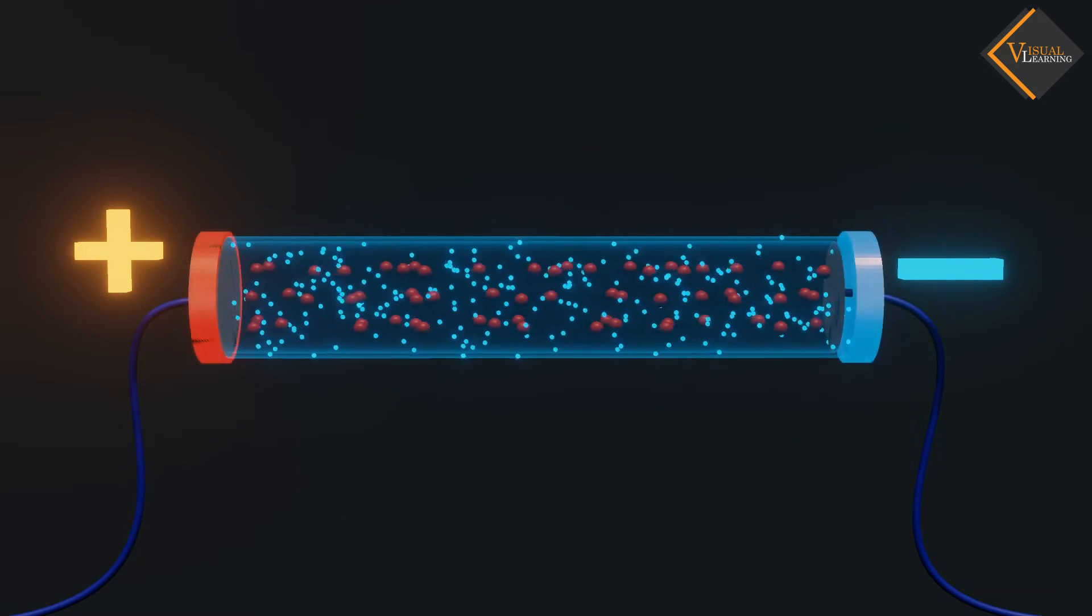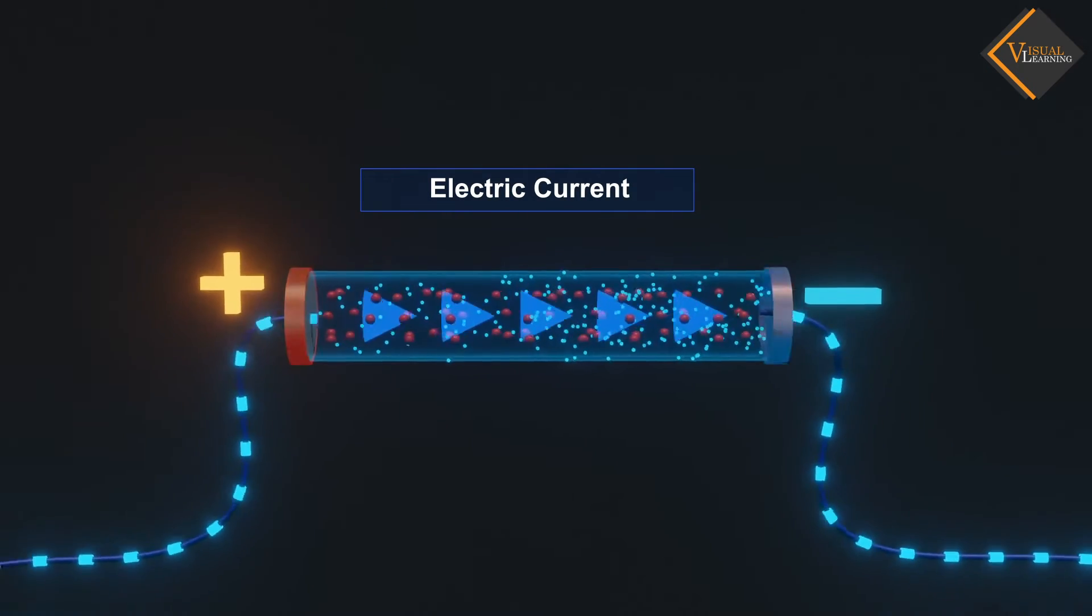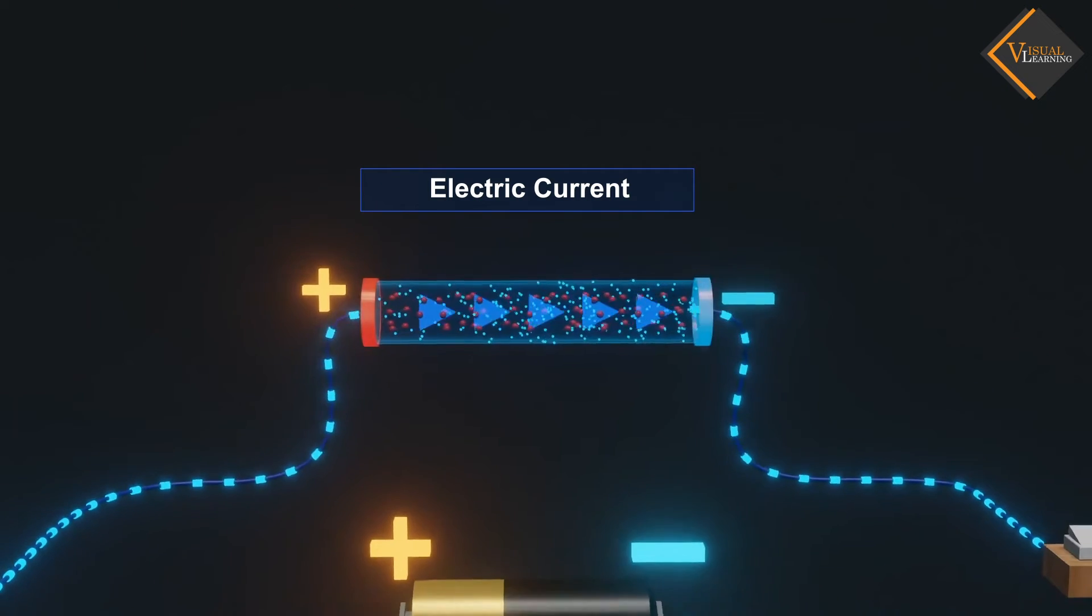Due to flow of electrons, current is generated in the conductor. And the direction of the current is always opposite to the flow of electrons.